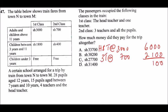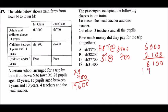All pupils occupied second class but were of different ages. The 28 pupils aged 12 years and above fall under the adult/children above 11 category, so they pay 700 each in second class. 28 × 700 = 19,600. Adding to the running total gives 27,700.